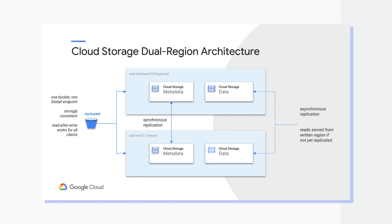When you choose Turbo Replication, that is SLA-backed with a guaranteed 15-minute RPO. Now let's understand how read-write operations work here. Read-writes can be served from both regions, and that's why it's truly active-active. For every new write, metadata is synchronously replicated across both regions, and data replication is based on the replication mode selected — either default or turbo — but it will be asynchronously replicated with different target times.